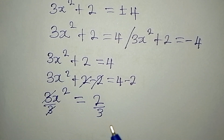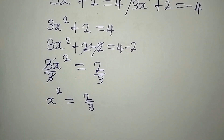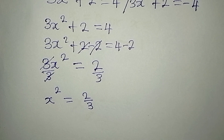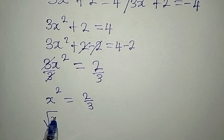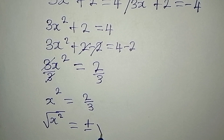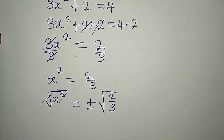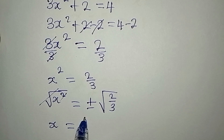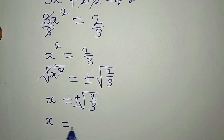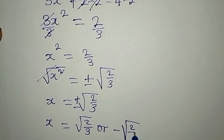The 3s cancel, so x squared equals 2 over 3. We cannot stop here because we are looking for x, not x squared. So we take the square root of both sides again — and on the right it is always plus or minus. Therefore x equals plus or minus square root of 2 over 3, meaning x equals square root of 2 over 3 or negative square root of 2 over 3.